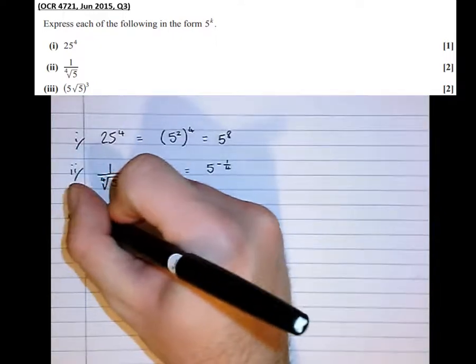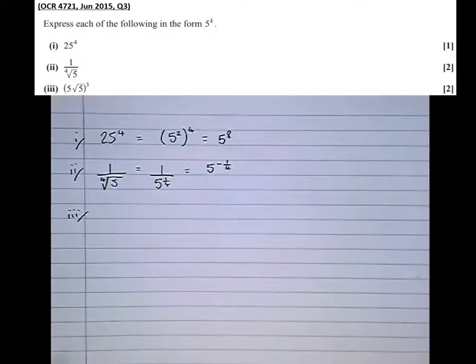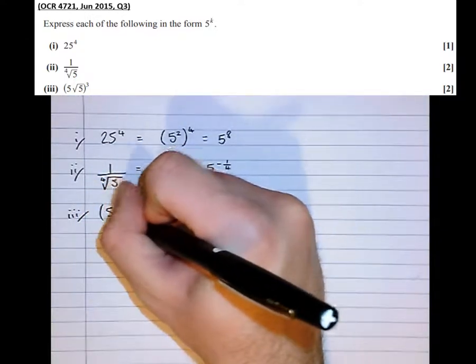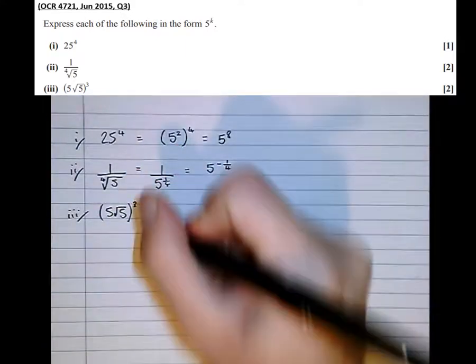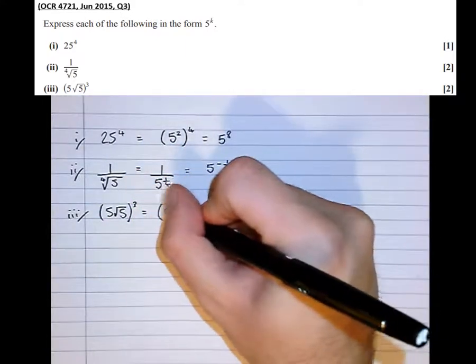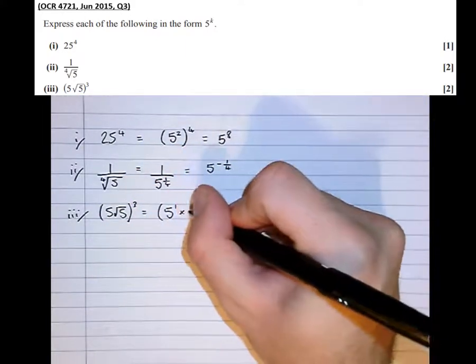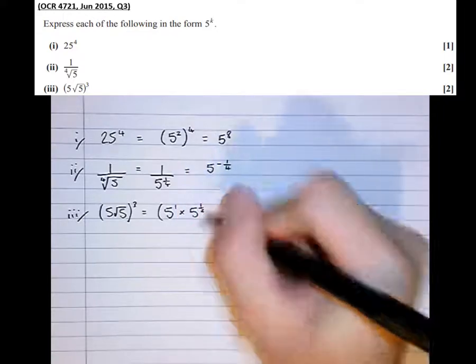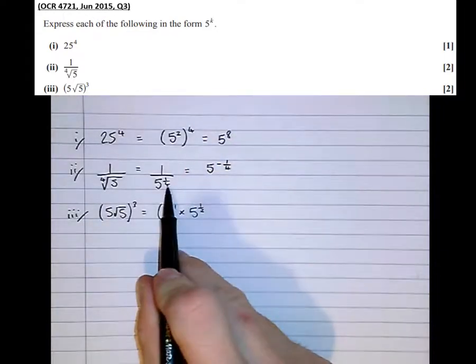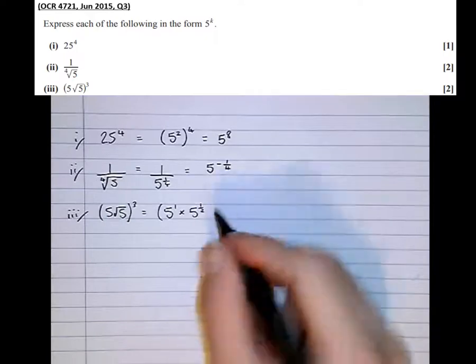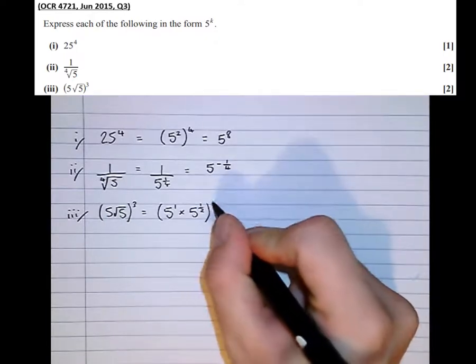And part 3, a bit more difficult. It says 5 root 5 cubed. Well that's equal to 5 to the power of 1 times 5 to the half. Much like power of a quarter is 4th root, power of a half is 2nd or square root. Cubed.